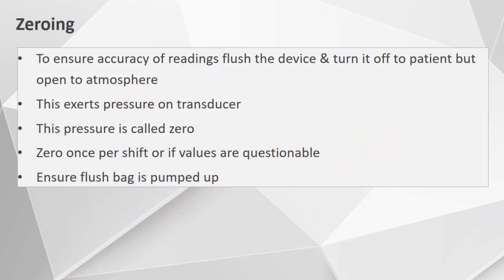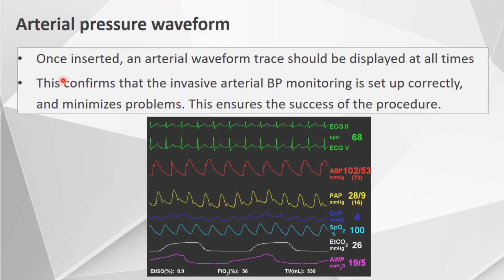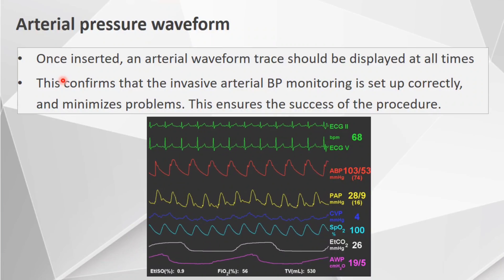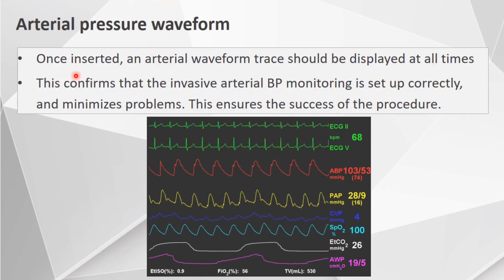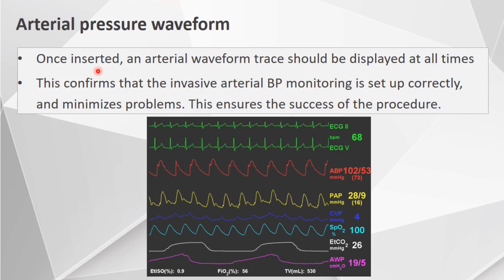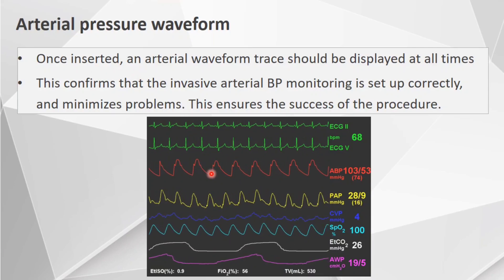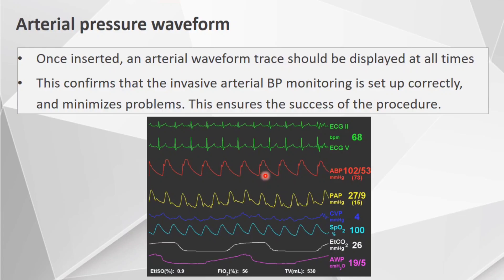The phlebostatic axis is located at the fourth intercostal space in the mid-axillary line, and this is where the transducer zero point should be. Coming to zeroing of the transducer: to ensure accuracy of readings, flush the device and turn it off to the patient but open to the atmosphere. This exerts pressure on the transducer and this pressure is called zero. Zero it once per shift or whenever values are questionable, and ensure the flush bag is pumped up. Once inserted, an arterial waveform trace should be displayed at all times, confirming that invasive arterial BP monitoring is set up correctly.